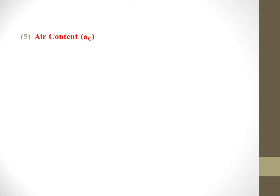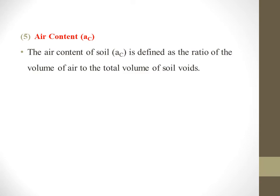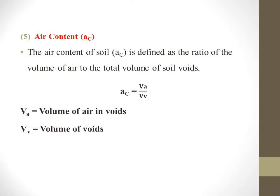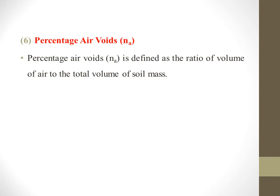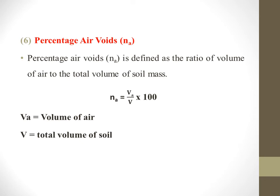Next is air content, denoted as AC. Air content of soil is defined as the ratio of the volume of air to the volume of voids, expressed as AC = VA / VV, where VA is the volume of air in voids and VV is the volume of voids. Next is percentage air voids, denoted by NA. Percentage air void NA is defined as the ratio of volume of air to the total volume of soil mass: NA = (VA / V) × 100, where VA is the volume of air and V is the total volume of the soil.